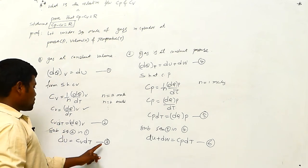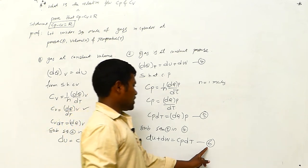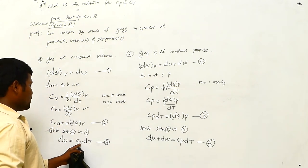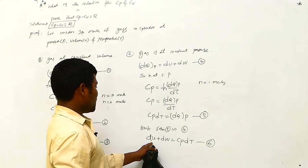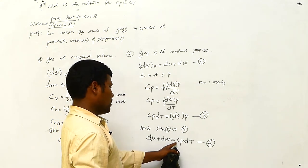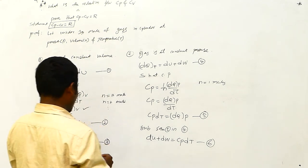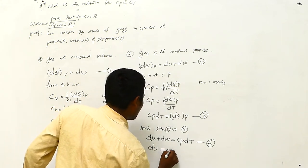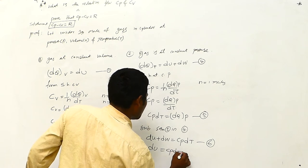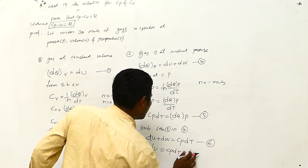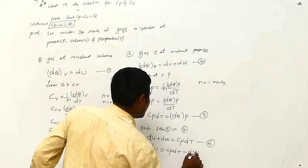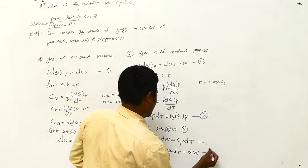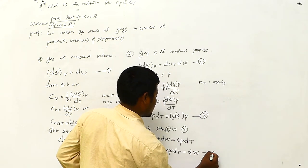At constant volume: dU equals Cv·dT. At constant pressure: dU plus dW equals Cp·dT. From this second equation, we can write dU equals Cp·dT minus dW. This is equation number six.